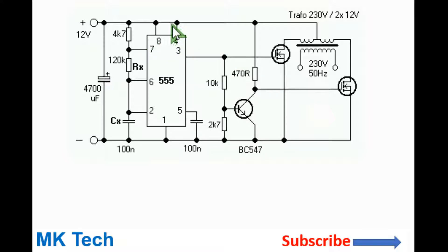Pins 8 and 4 are connected to the positive rail while pin 1 is connected to ground. Pin 5 is connected to ground via this 100 nF capacitor. The trigger pin 2 is connected to ground via this timing capacitor which is also 100 nF. The threshold pin 6 is connected to pin 2.